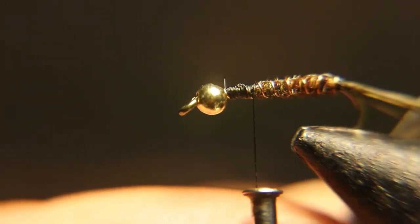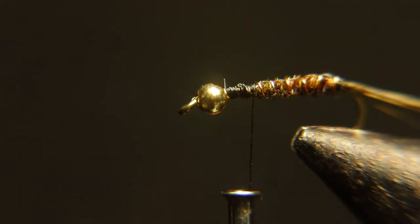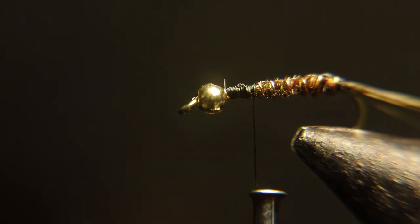Okay, for the shell back, we're going to tie in nymph skin. I like to segment it. The segmented colors of this look really good when tied in, so I use it for most of my nymph patterns, the shell over, instead of like regular pheasant tail or turkey quill. I like this stuff.